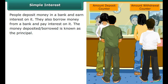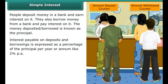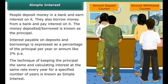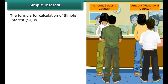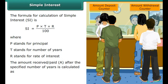People deposit money in a bank and earn interest on it, or borrow money and pay interest on it. The money deposited or borrowed is known as the principal. Interest is expressed as a percentage of the principal per year, like 2% per annum. The technique of keeping the principal the same and calculating interest at the same rate every year for a specified number of years is known as simple interest. The formula is SI equals P into T into R, whole upon 100, where P is principal, T is number of years, and R is rate of interest. The total amount is A equals P plus SI.